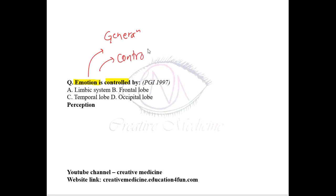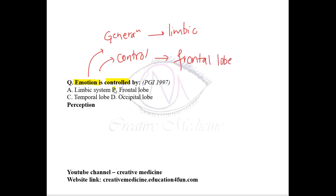Emotions are generated in the limbic system. However, emotions are controlled or regulated by the frontal lobe. So emotions are controlled by the frontal lobe, but they are generated in the limbic system.